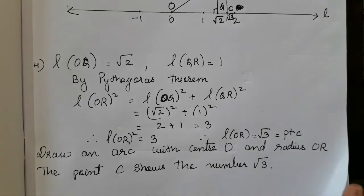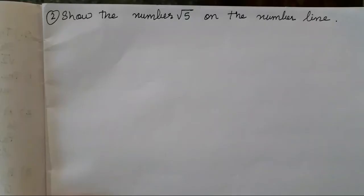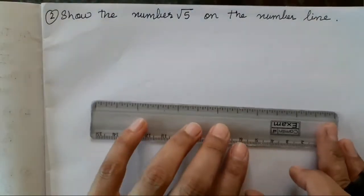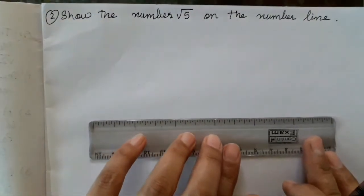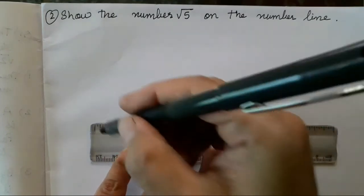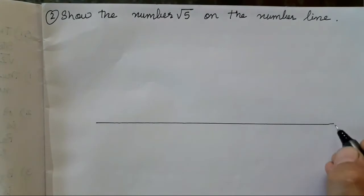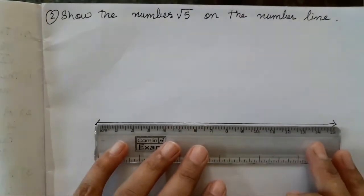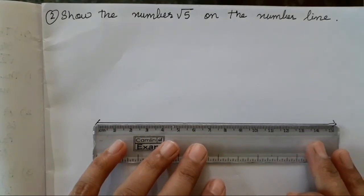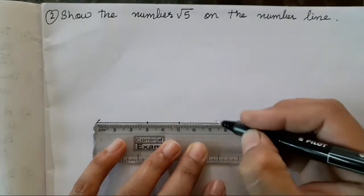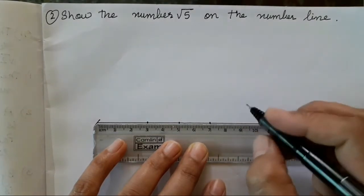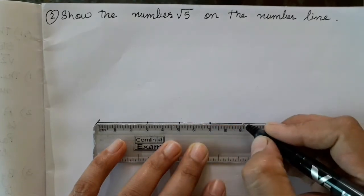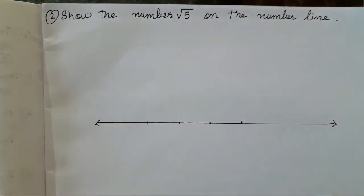Let's draw one more number line so that it will be more clear. Show the number root 5 on the number line — same steps we have to repeat. We will take line L. Again, we will take a distance of 2 units between 2 numbers. I will start from here — 0, minus 1, 0, 1, and 2 I will mark over here.